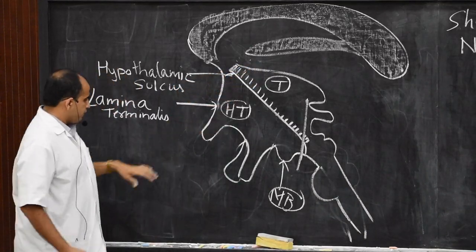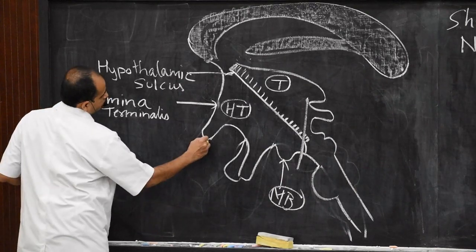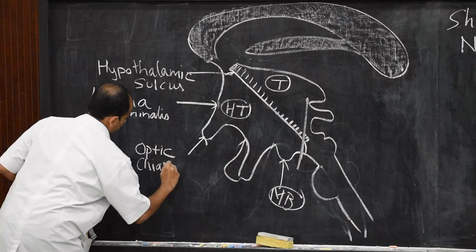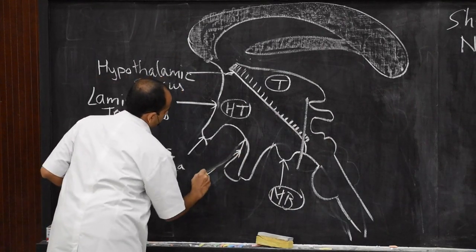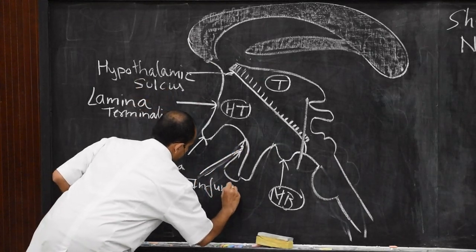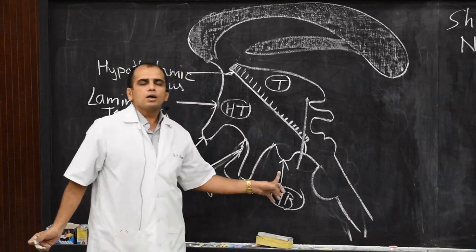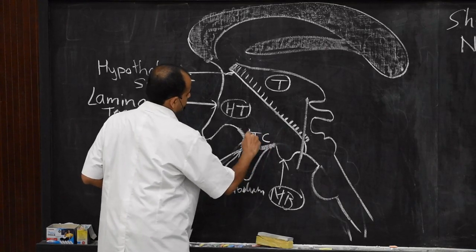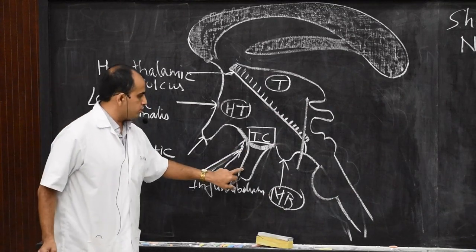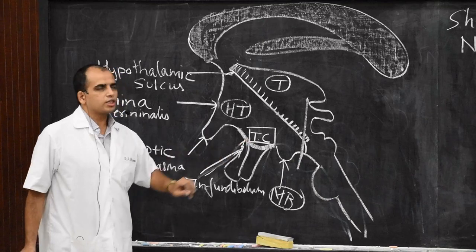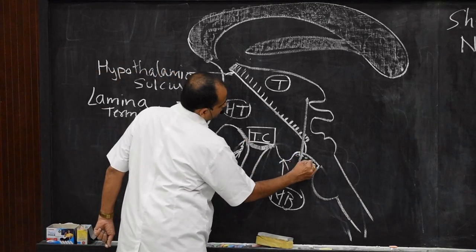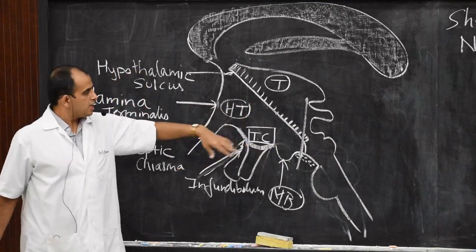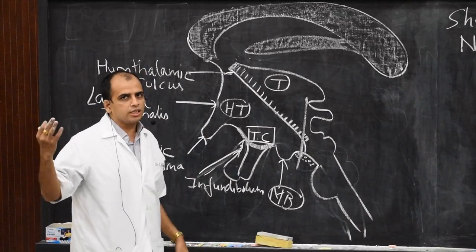Superiorly it is related to the thalamus. Inferiorly it is related to the structures of the floor of the third ventricle — going anterior to posterior: the optic chiasma, then the infundibular part, then the tuber cinereum, which is the elevation from where the infundibular part of the posterior pituitary gland starts, then the mammillary body, and behind it the posterior perforated substance. So the floor of the third ventricle forms the inferior relations. Laterally, the hypothalamus is related to the internal capsule.